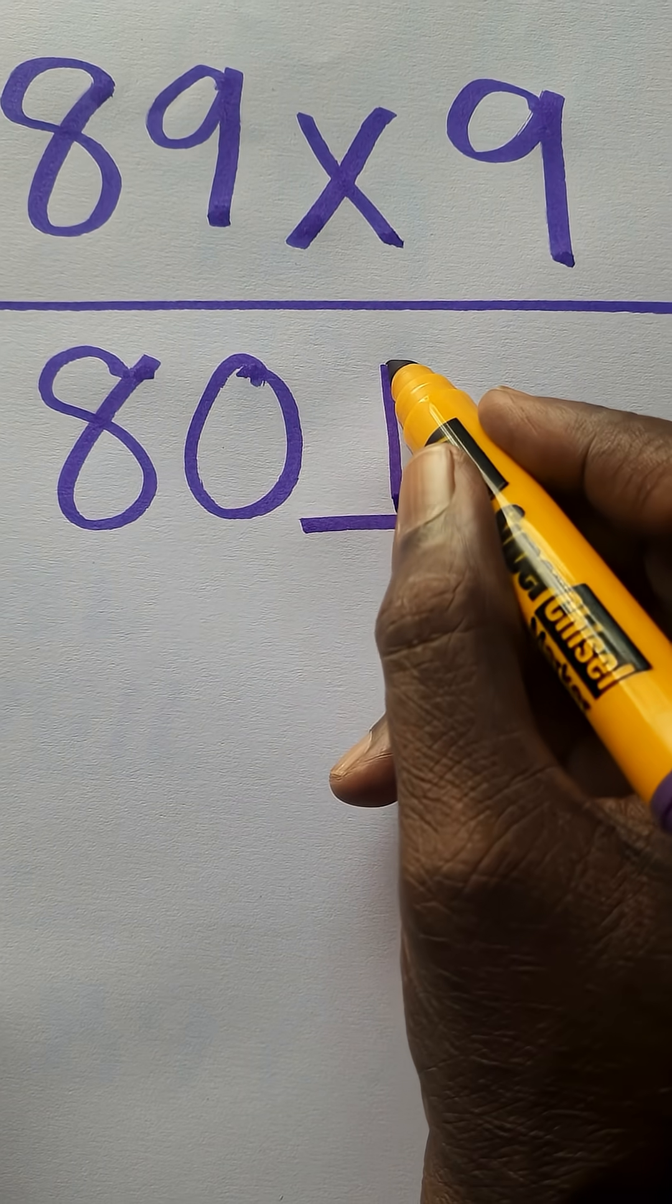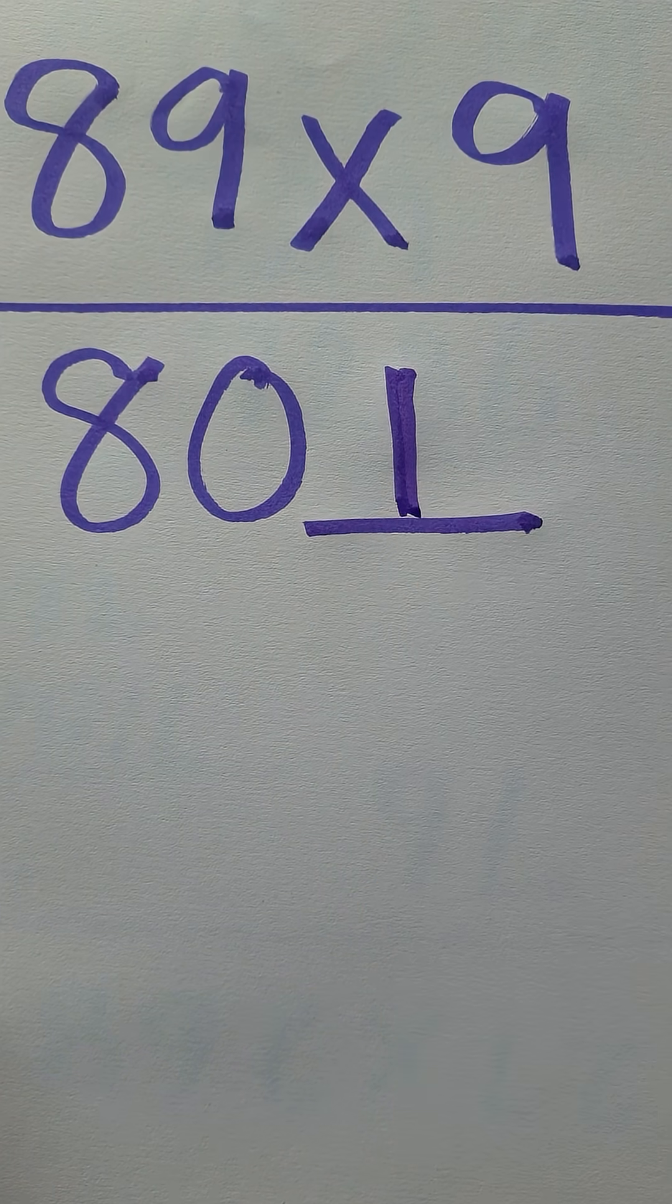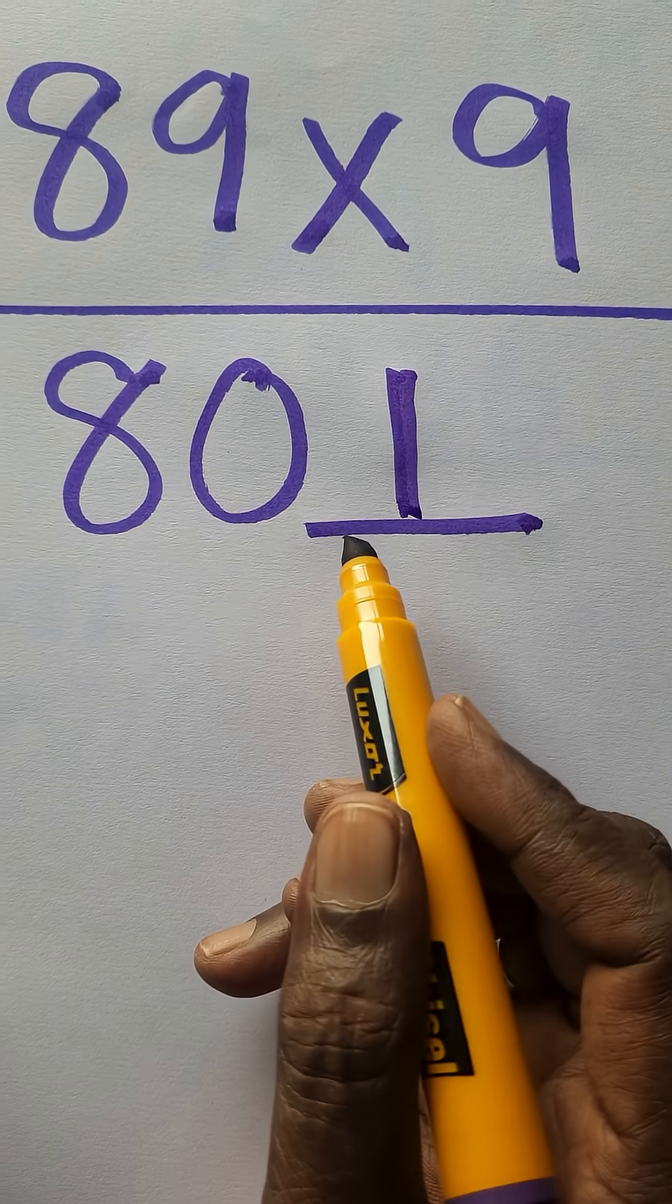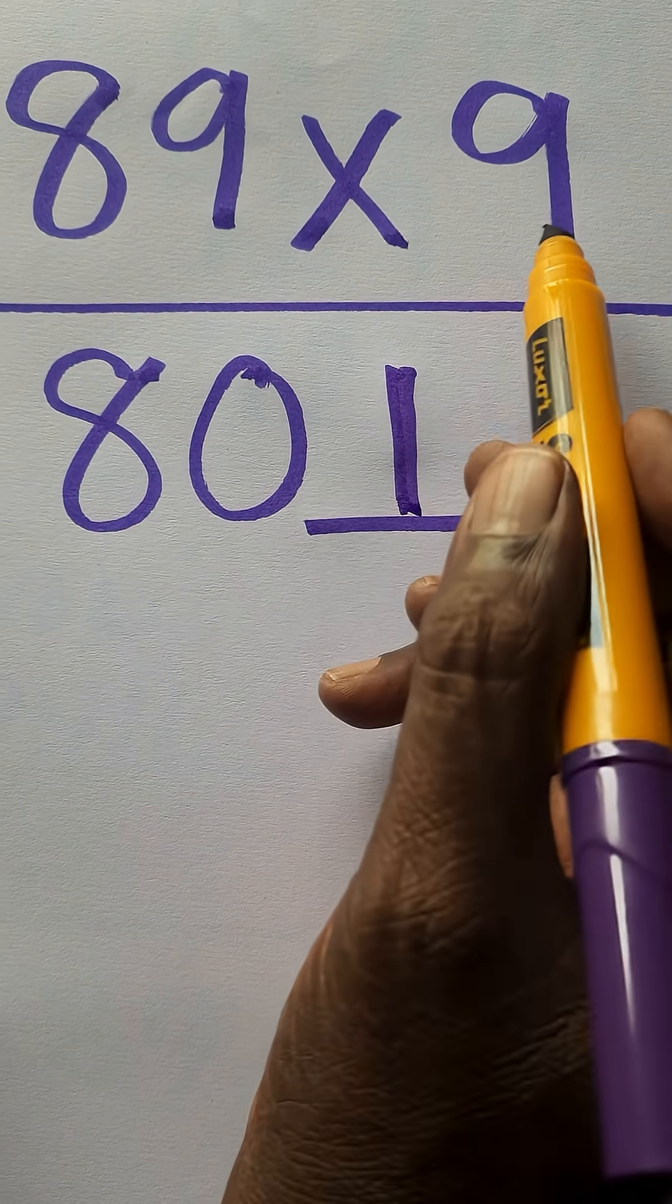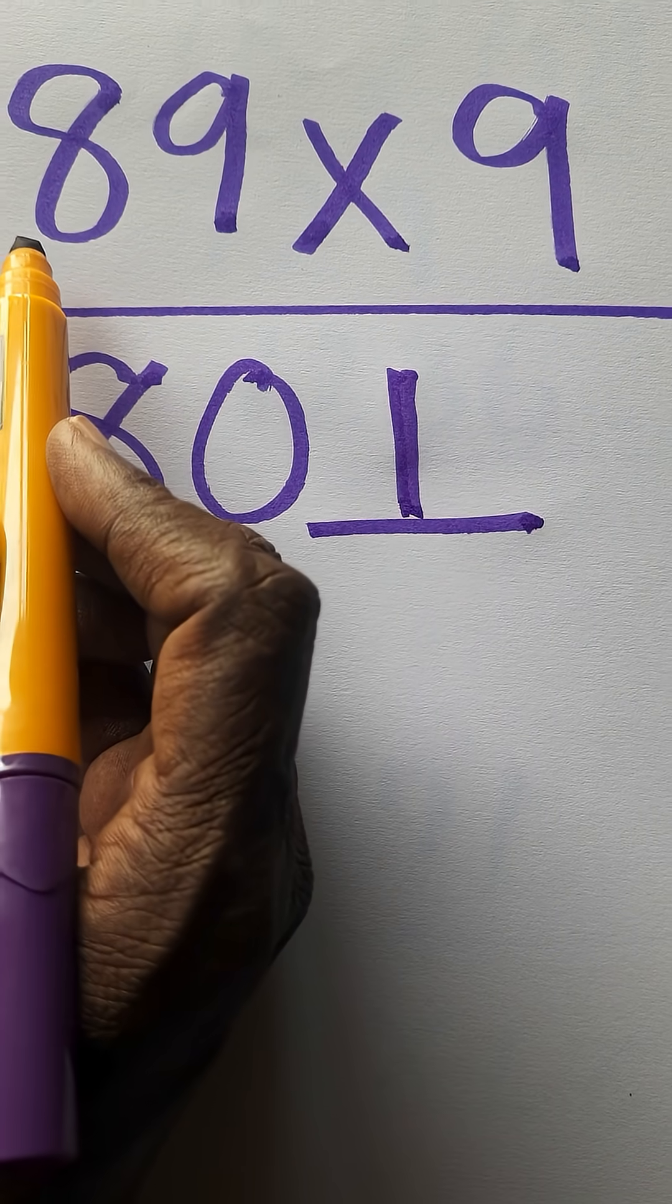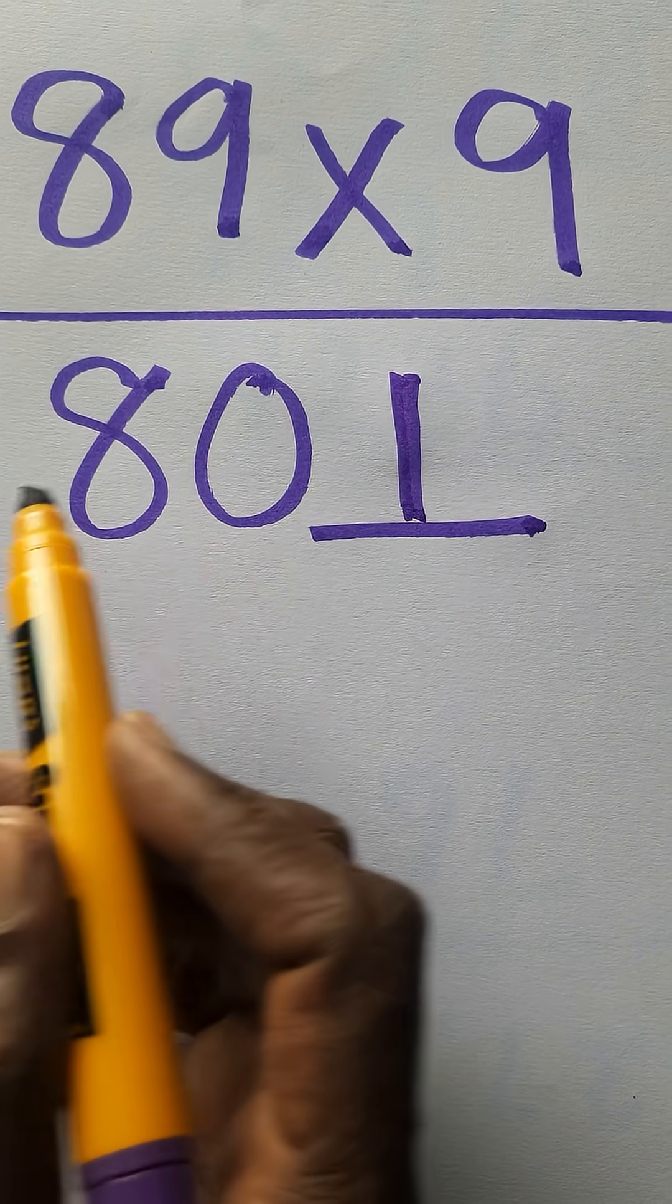Okay, that's all. 9 times 9 is 81, carry 8. 9 times 8, so 72 plus 8 equals 80.